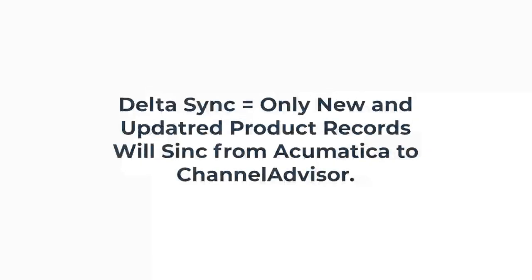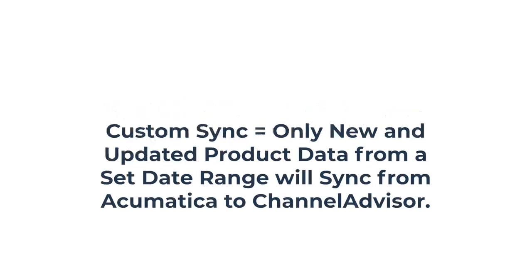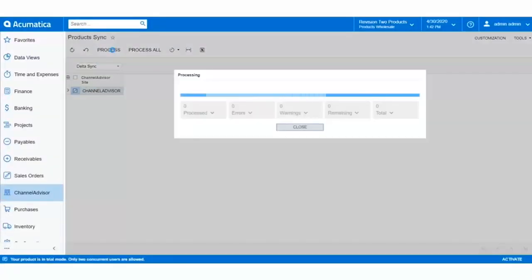Delta syncs are more common, as the delta sync type will only process new or updated product records and push that data from Acumatica to Channel Advisor. Custom sync types allow a user to select a specific date range of product records and changes to be synced, rather than all product changes and updates from the beginning of the connector implementation. For this example, we're going to select Delta sync, then toggle on the Channel Advisor site we'd like, and click Process.